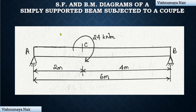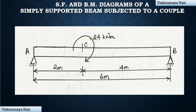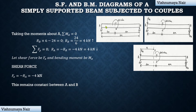A simply supported beam usually has a hinge support at one end and a roller support at the other end. Here I have shown a simply supported beam which is hinged at both ends A and B, and it is subjected to a clockwise couple at a distance of 2 meters from end A. This clockwise couple at point C will try to lift the beam at end A and depress the beam at end B. In order to oppose this, reaction Ra will be in the downward direction and Rb will be in the upward direction.